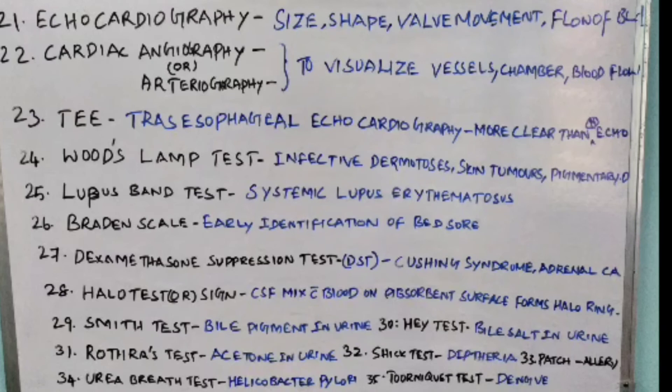Twenty-ninth point: Smith test, done to find out bile pigment in urine. Thirtieth point: Hay test, done to find out bile salt in urine. Thirty-first point: Rothera's test, done to find out acetone in urine. Thirty-second point: Schick test, done in diphtheria.